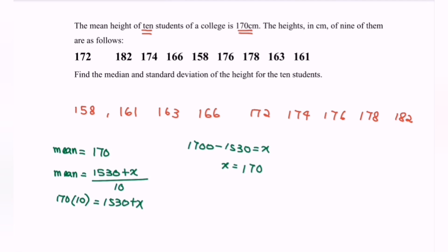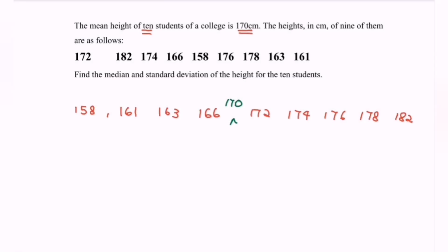So x equals 170, which is the 10th term. The location for 170 will be placed in the ordered list accordingly. Next, referring to the question: find the median.